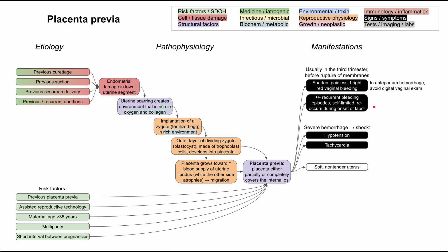There are some pertinent negatives worth knowing. This bleeding is painless, and the uterus is soft and non-tender. This is important to differentiate placenta previa from placental abruption, which also causes third trimester bleeding but is very painful. So if you have a soft, non-tender uterus on exam and the patient is not complaining of pain, placenta previa is more likely. If the patient is complaining of pain, you should consider placental abruption.